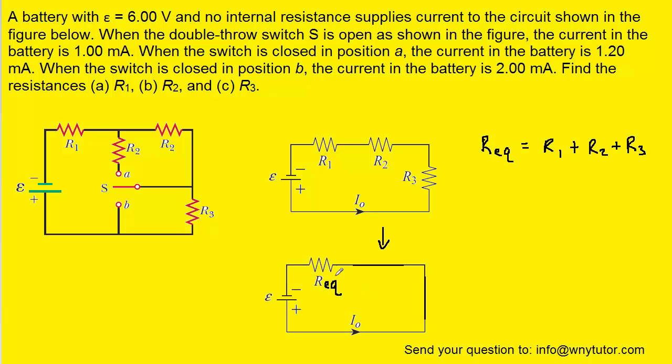Now it turns out that we can find the value of REQ because the question gives us the EMF of the battery, which is 6 volts. It also gives us the current that's flowing through the circuit when the switch is in the open position, which is what we are analyzing currently, and that current is one milliamp.